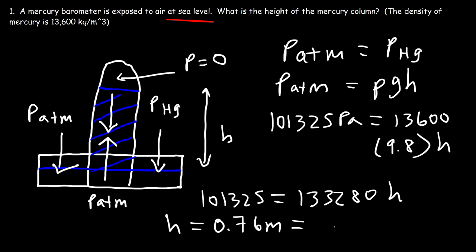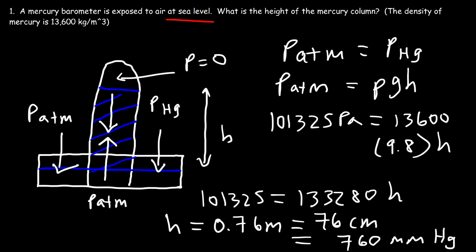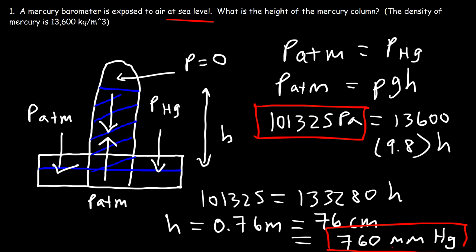Multiplying 0.76 meters by 100 gives 76 centimeters. You've seen this value in millimeters — since one meter equals 1,000 millimeters, 0.76 times 1,000 equals 760 millimeters of mercury, which equals 1 atm or 101.3 kilopascals. That's the height of the mercury column at sea level.